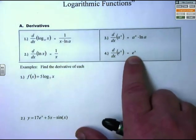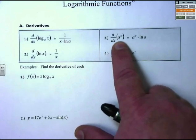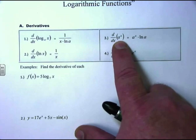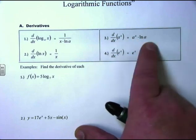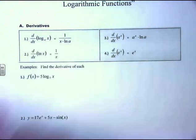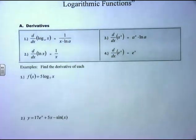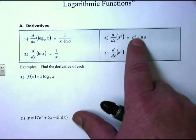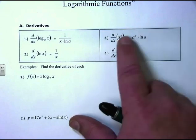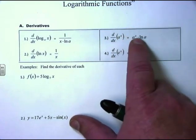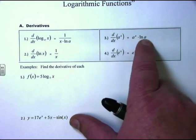Now, if you happen to have another base — like 2 to the x instead of e — you can take the derivative of that as well, but you have to have that same type of adjusting factor like we do with other logs besides the natural log. The derivative of a to the x is a to the x times the natural log of a. For example, the derivative of 2 to the x would be 2 to the x times the natural log of 2.